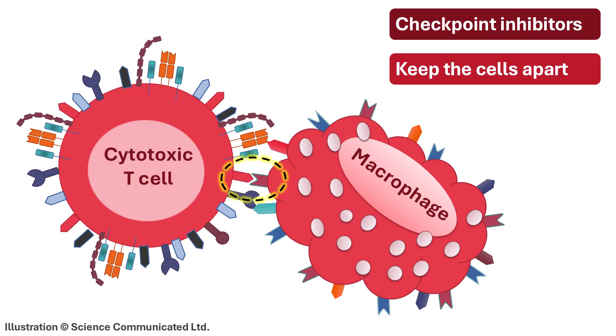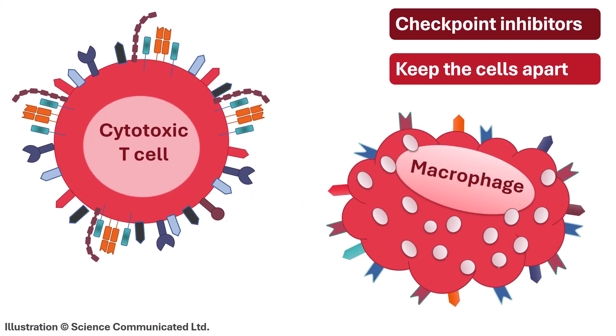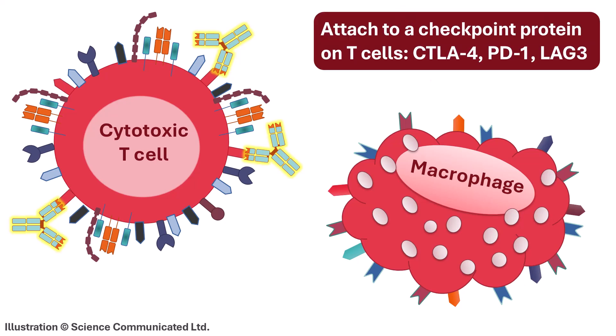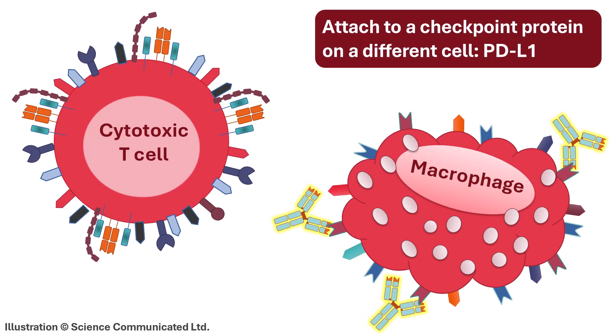Checkpoint inhibitors are a group of immunotherapies that block the connection between an inhibitory checkpoint protein and its partner protein on another cell. Sometimes the checkpoint inhibitor does this by attaching to a checkpoint protein on the T cell itself — proteins like CTLA-4 or PD-1 or LAG-3.